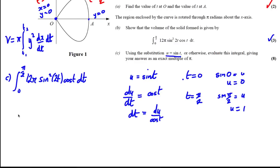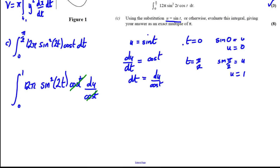Now we can substitute into the integral between 0 and 1. 12π stays as is. We have sin²(2t)cos(t) dt. cos(t) times dt is actually just du over cos(t) times cos(t), so the cos(t)'s cancel.